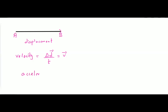Acceleration is the rate of change of velocity — the change in velocity with respect to time. Acceleration is also a vector quantity, and its direction is along or against the direction of velocity. The acceleration formula is: final velocity minus initial velocity, divided by final time minus initial time.